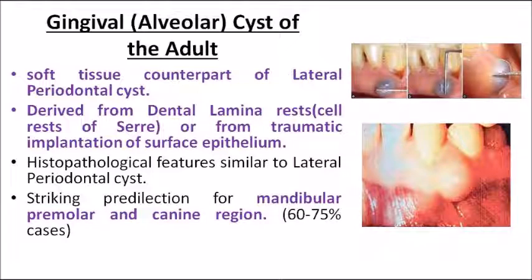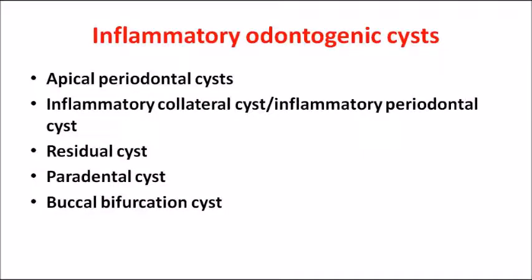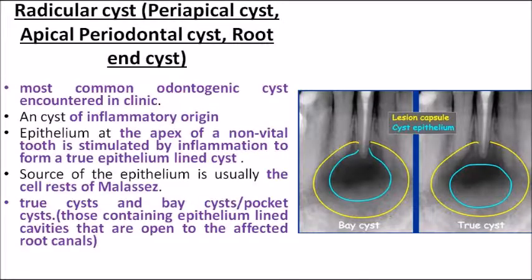Now moving on to the inflammatory type of odontogenic cyst. The classification includes: apical periodontal cyst, inflammatory collateral cyst or inflammatory periodontal cyst, residual cyst, paradental cyst, and buccal bifurcation cyst. These are the lesions commonly encountered in clinics when dealing with endo-perio lesions, as they arise due to inflammation — often a sequela of dental caries.